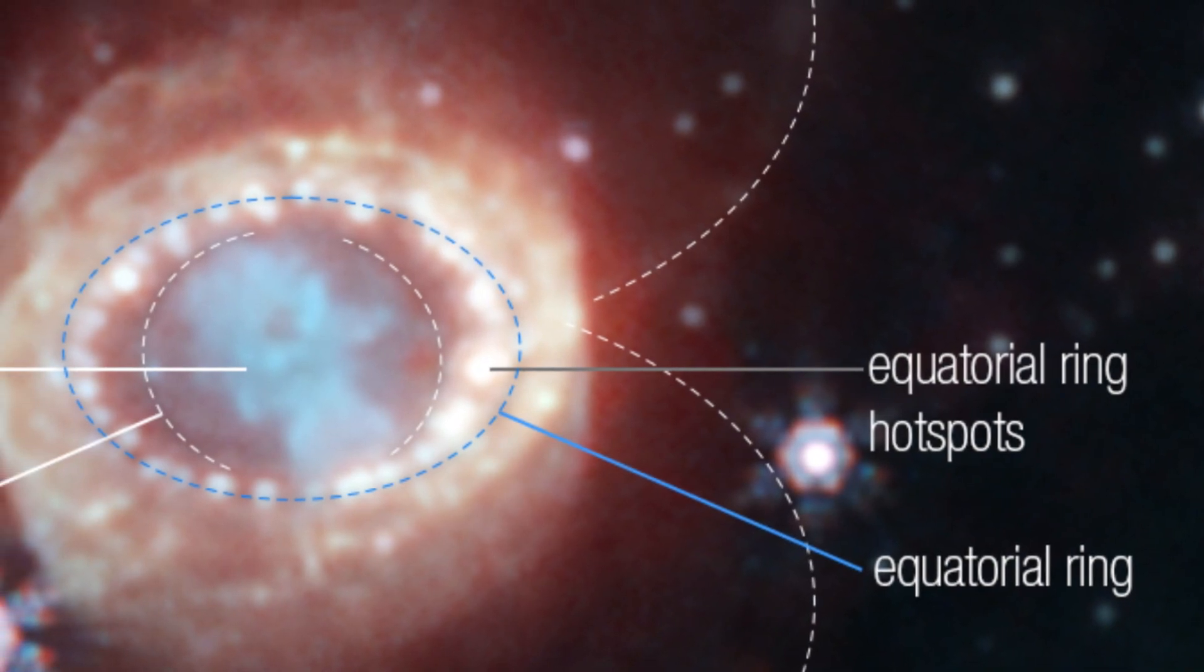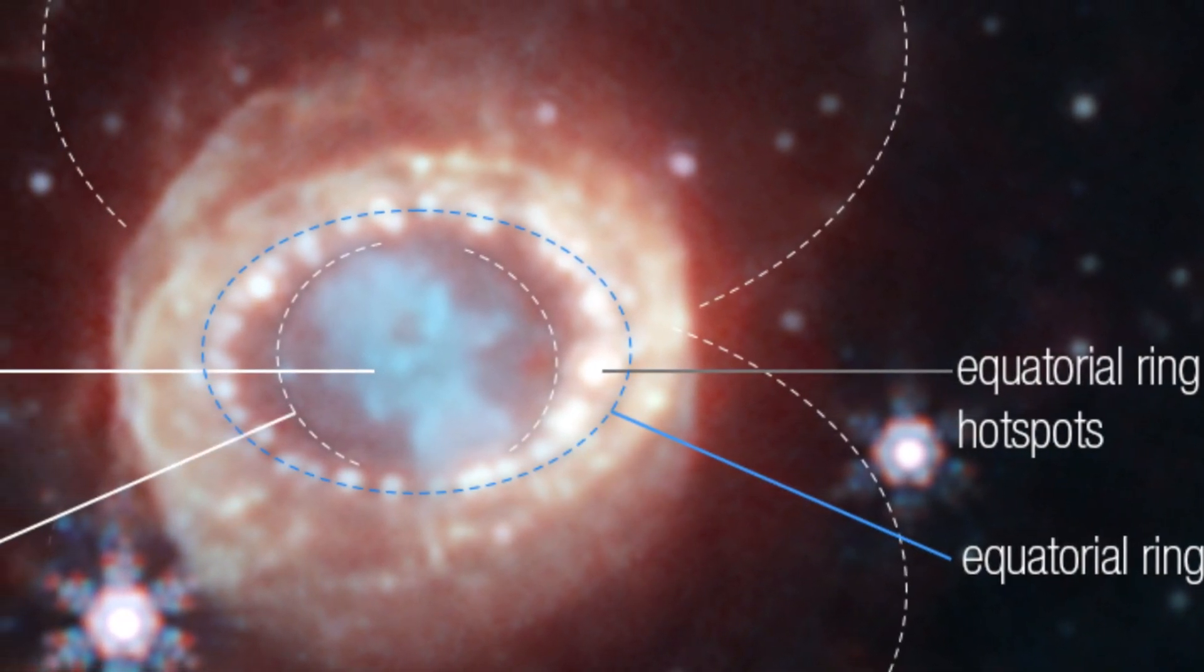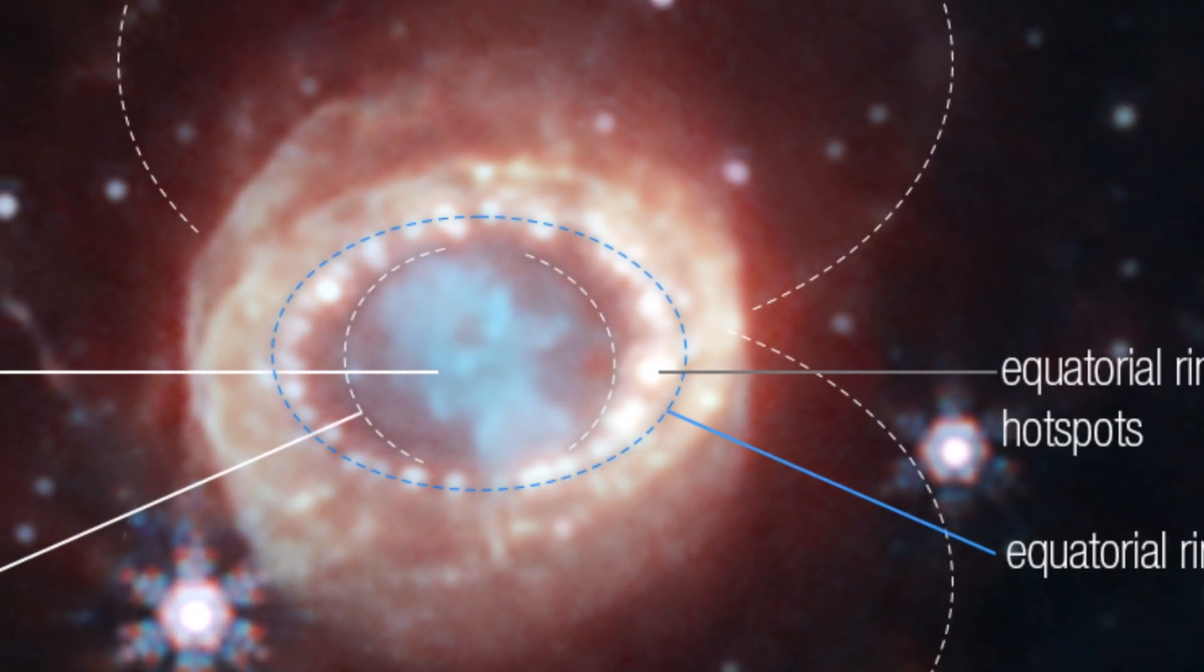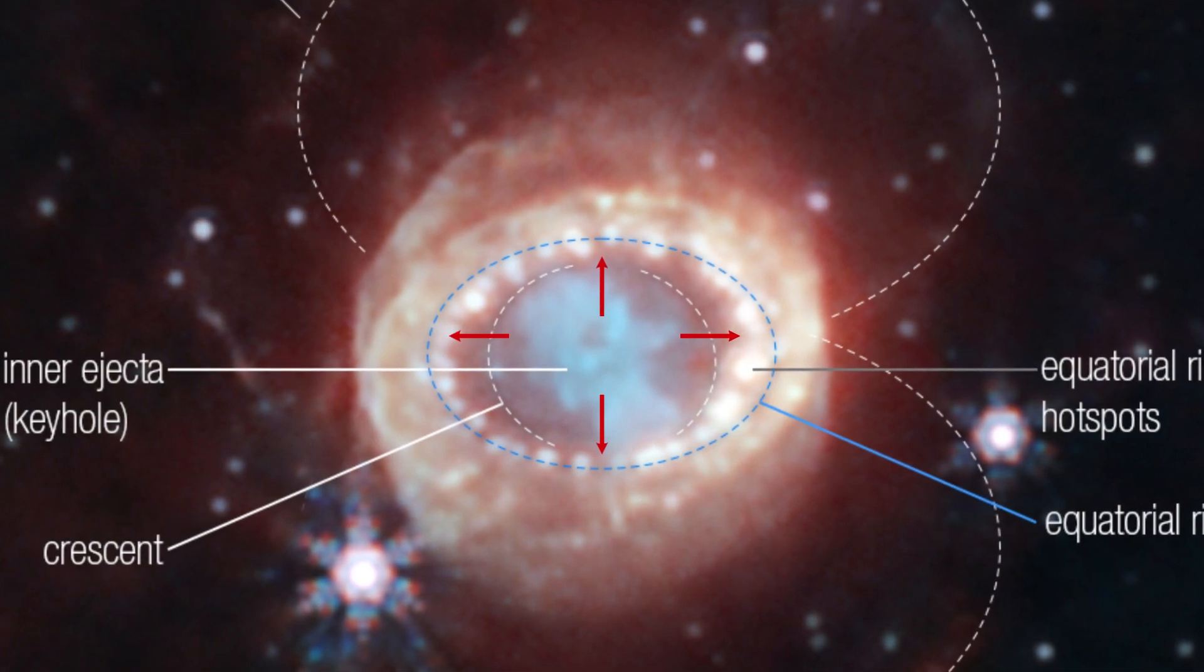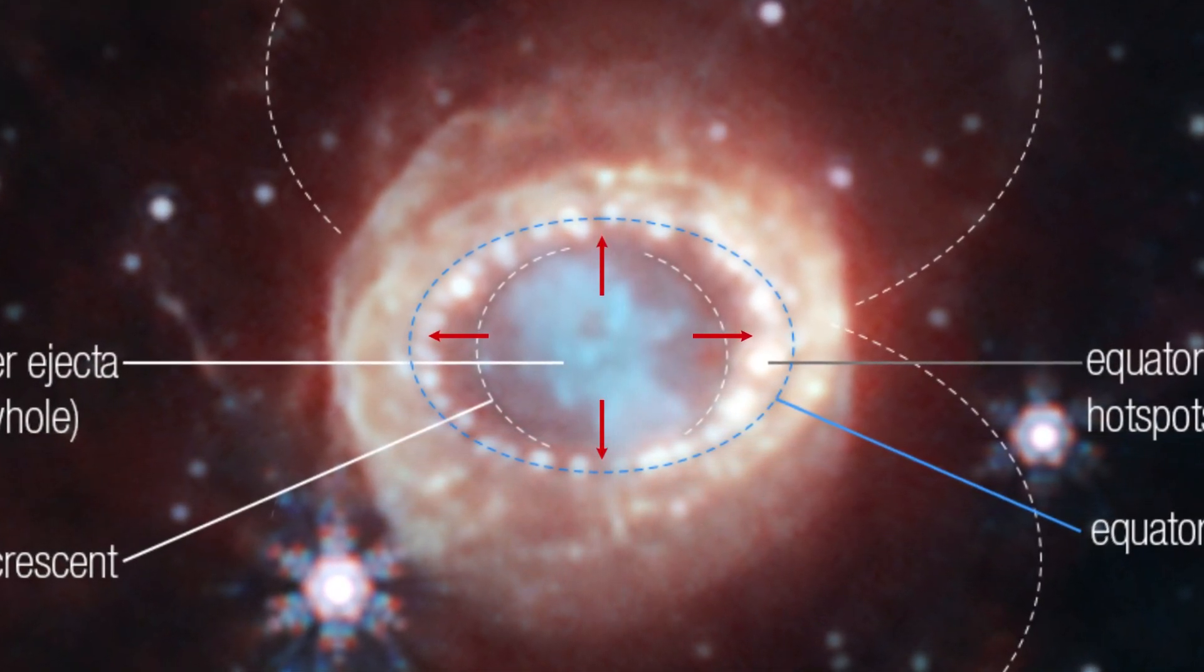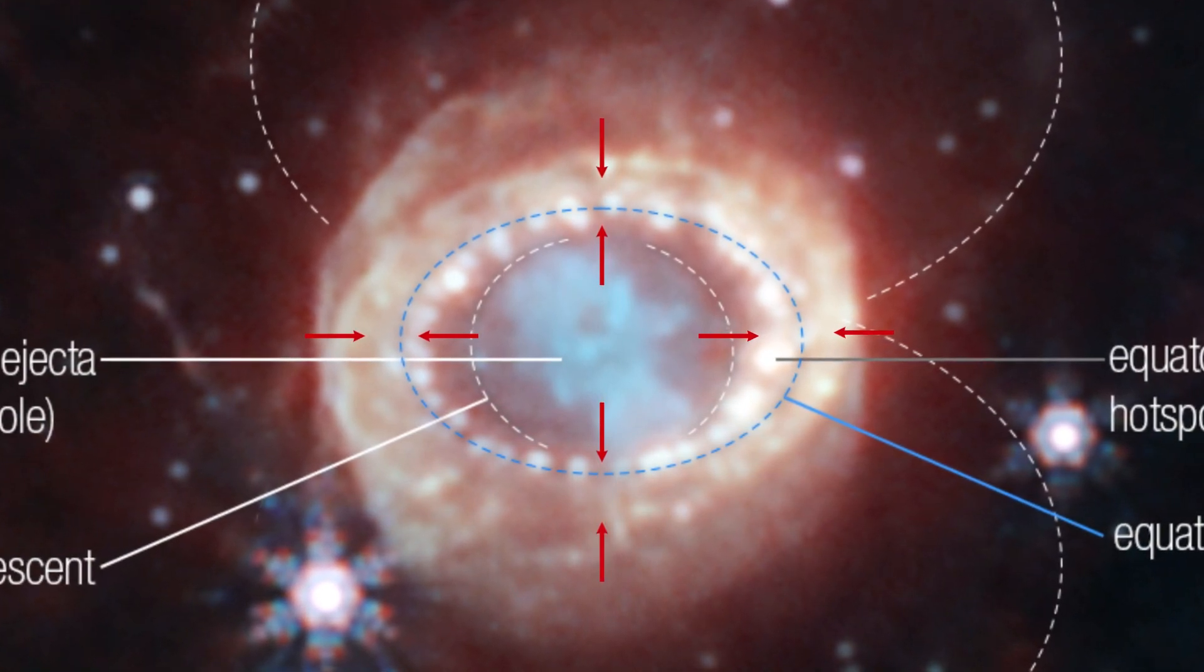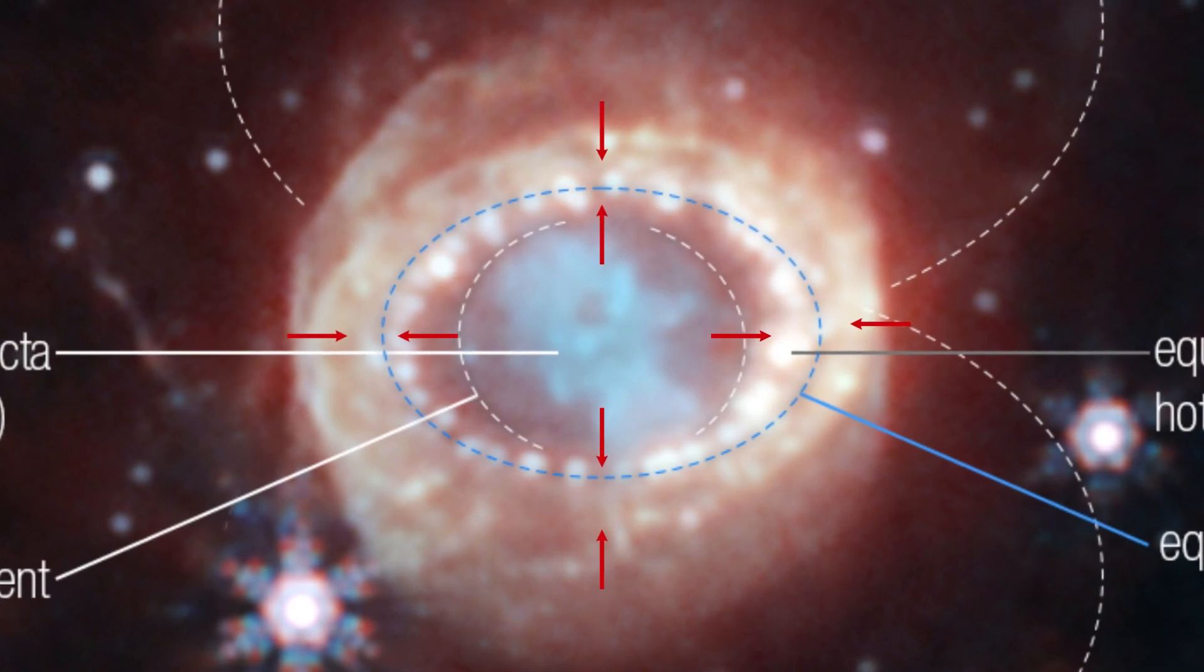Surrounding the inner keyhole is a bright equatorial ring. This ring is formed from material ejected tens of thousands of years before the supernova explosion. Bright hot spots in the ring appeared as the supernova's shockwave hit it. These hot spots can now be found even outside the ring, surrounded by diffuse emission. This diffuse emission is likely caused by the shockwave hitting more distant material.